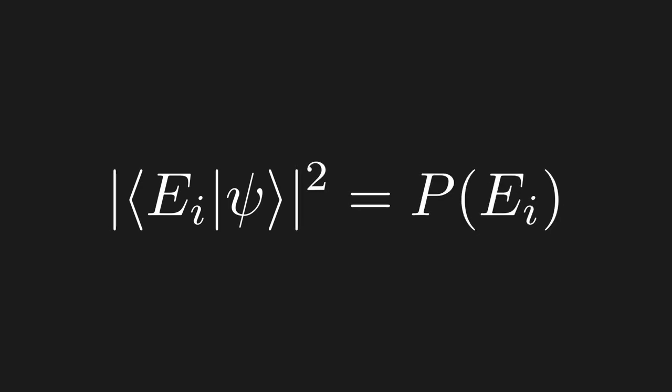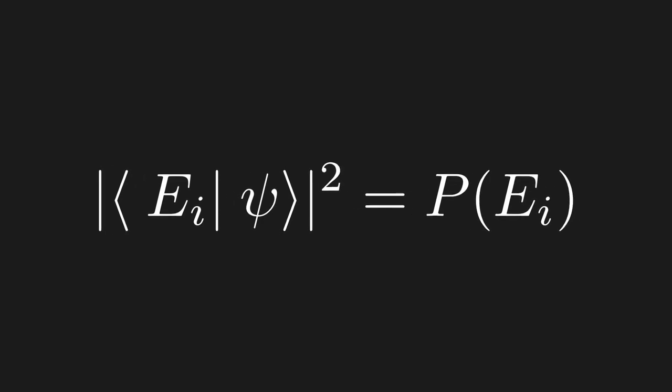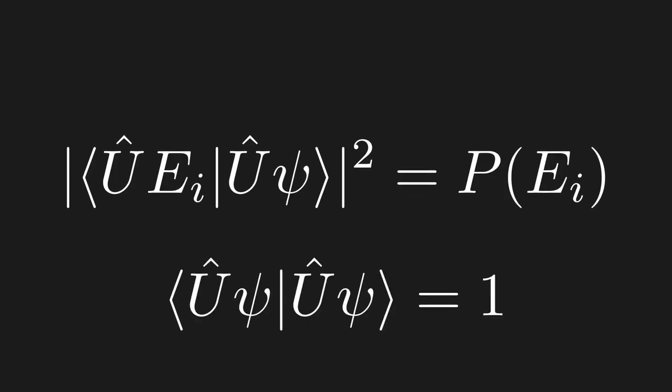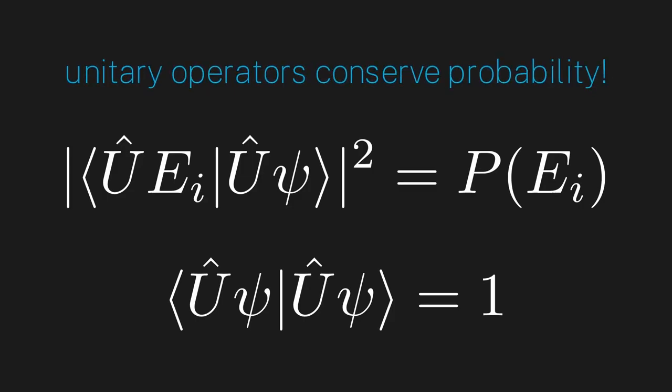Great, so why do we care about unitary operators in quantum mechanics? Well, what do inner products represent in quantum mechanics? 99% of the time, inner products are used to calculate probabilities. So, since unitary operators preserve the inner product, if we act a unitary operator on every vector in our space, the probability of getting a particular measurement wouldn't change. Likewise, the total probability of our state would still be equal to 1. So, the big realization is that unitary operators conserve probability in quantum mechanics.